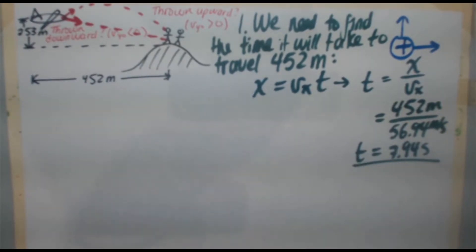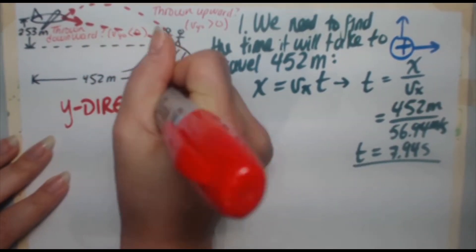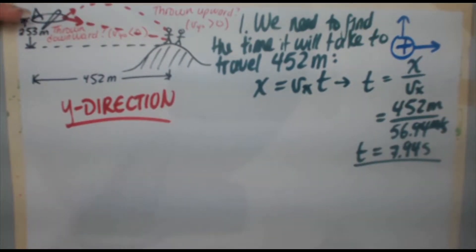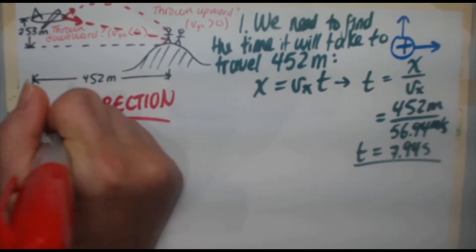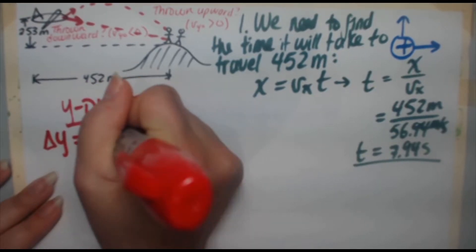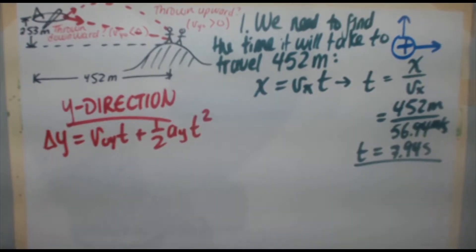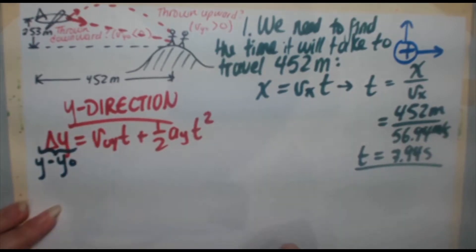We now need to go and plug this into the Y direction. So we are looking for the initial speed in the Y direction. We know the initial height it starts that we define that to be zero. We know the final Y height, it's going to be minus 253. Acceleration in the Y is negative 9.8 meters per second squared, and time we have. So we're going to use this expression: delta Y equals V not Y times T plus one half acceleration Y T squared. And remember, delta means change, so this is simply final Y minus the initial Y.